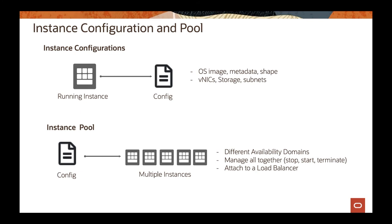Instance configuration is a little bit different. When you're creating an instance configuration of a running instance, you're actually getting what we call the skeleton of the instance — all the information associated to that specific instance. For example: the operating system image used to launch that instance, the metadata, the shape you selected, all the network and VNICs associated to it, the storage and block volumes, and which subnet you placed that instance in. All that information you input when you launch an instance will be associated to that instance configuration.